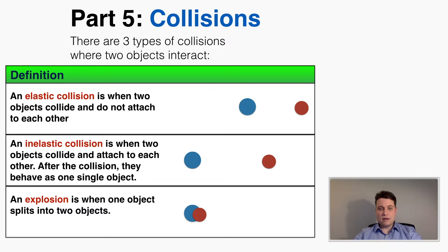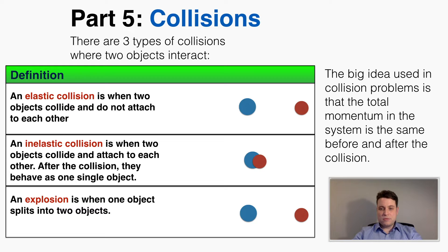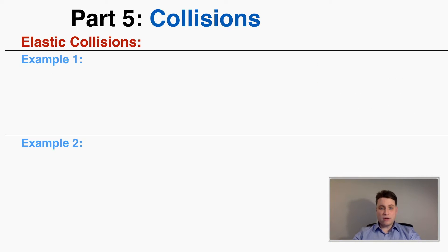An inelastic collision is the opposite of an elastic collision — this is when two objects collide and attach to each other, so after the collision they behave as one single object. An explosion is when one object splits into two objects. The big idea used in collision problems is that the total momentum in the whole system of the two objects is the same before and after the collision. We use the conservation of momentum to predict the results of all three types of collisions.